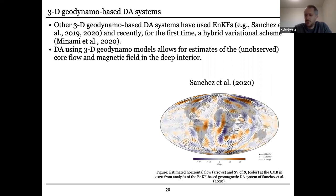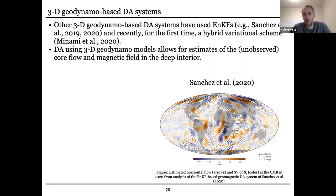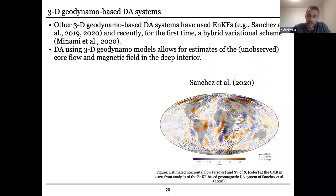Some contributions to the IGRF forecasts don't use geodynamo models — maybe physics-based models or just mathematical extrapolation methods, and they can work fairly well. What makes doing the dynamo assimilations interesting is that you get estimates of all these physical features of the dynamo that otherwise go unobserved — for example, estimates of the core flow and the magnetic field in the interior. This is a nice picture from the Sabrina Sanchez paper.